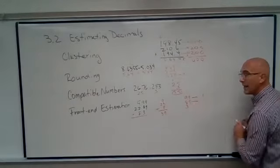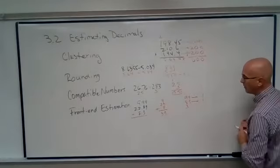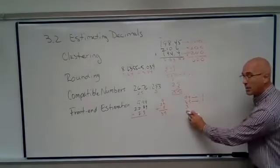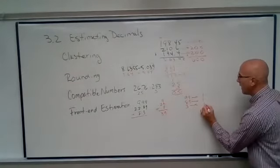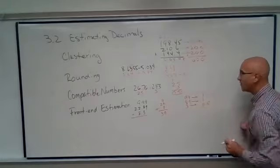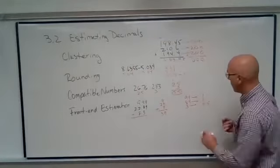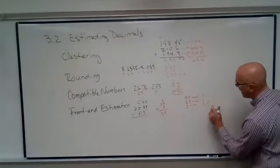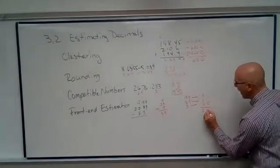This 0.89 or 89 hundredths, we're going to bump to a 1. This 0.3 or 3 tenths, we're going to bump that to a 0.5. That's pretty close. When we add 1 plus 1 plus a half, we get 2 and a half.